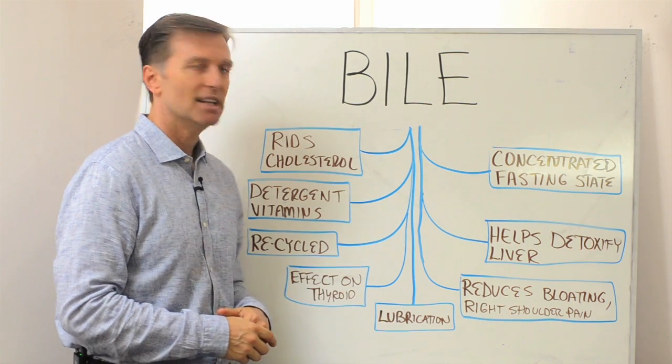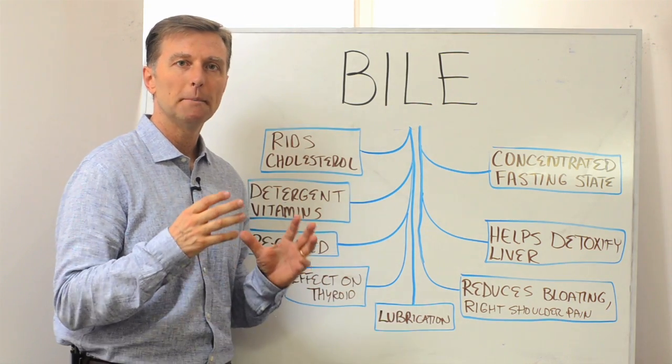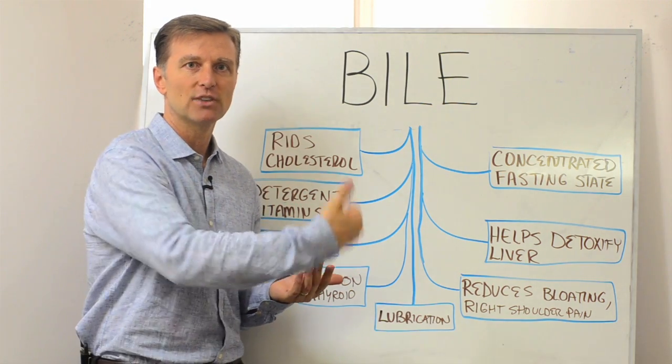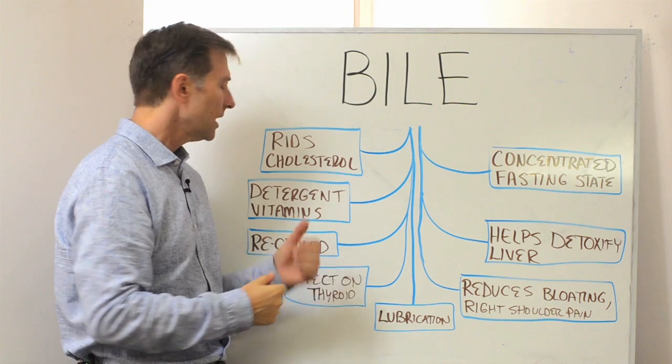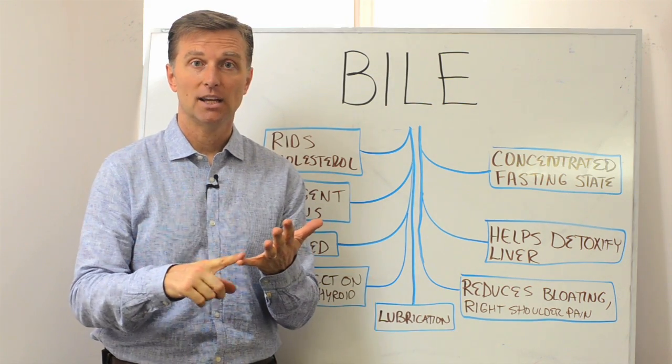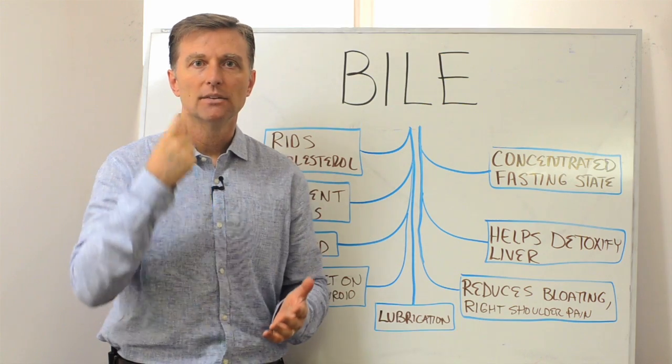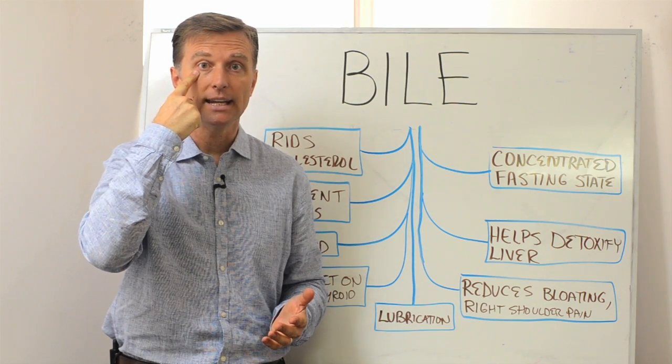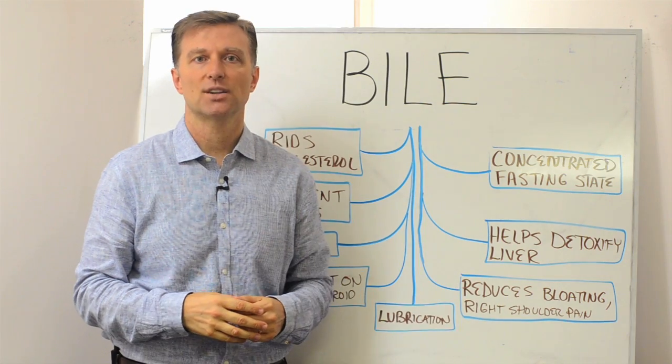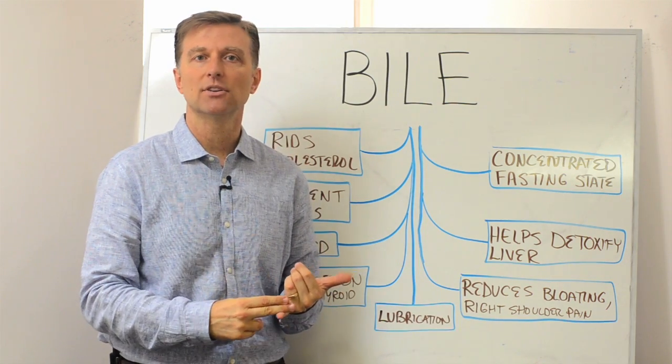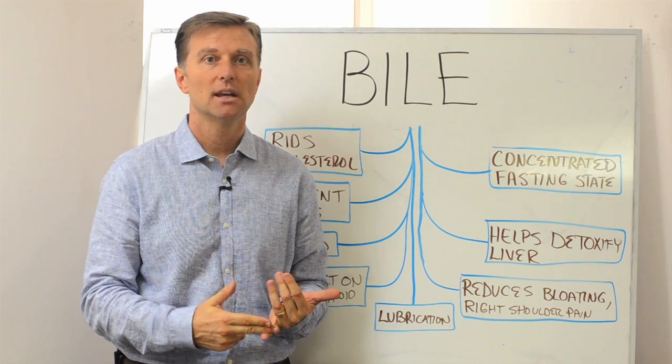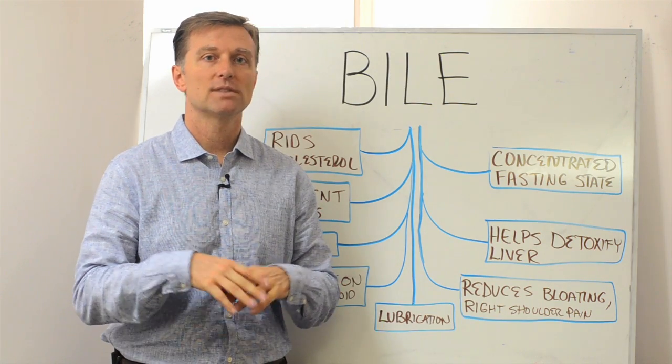Bile is the detergent. It's very similar to dishwashing detergent because it breaks down the grease, the oil, the fats, primarily for the fat-soluble vitamins. So we have vitamin A, vitamin D, so you can absorb vitamin A for the eyes, seeing in the dark at night, for your skin to prevent acne, to prevent sinus congestion. Vitamin D for absorption for your bones, make sure there's no calcium deposits for the immune system. It goes on and on and on.